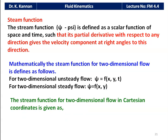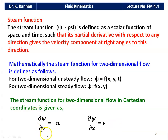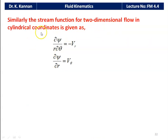The stream function for two-dimensional flow in Cartesian coordinates: ∂ψ/∂y = −u and ∂ψ/∂x = v, where u is the velocity in the x-direction. For two-dimensional flow in cylindrical coordinates: ∂ψ/(r·∂θ) = −v_r and ∂ψ/∂r = v_θ.